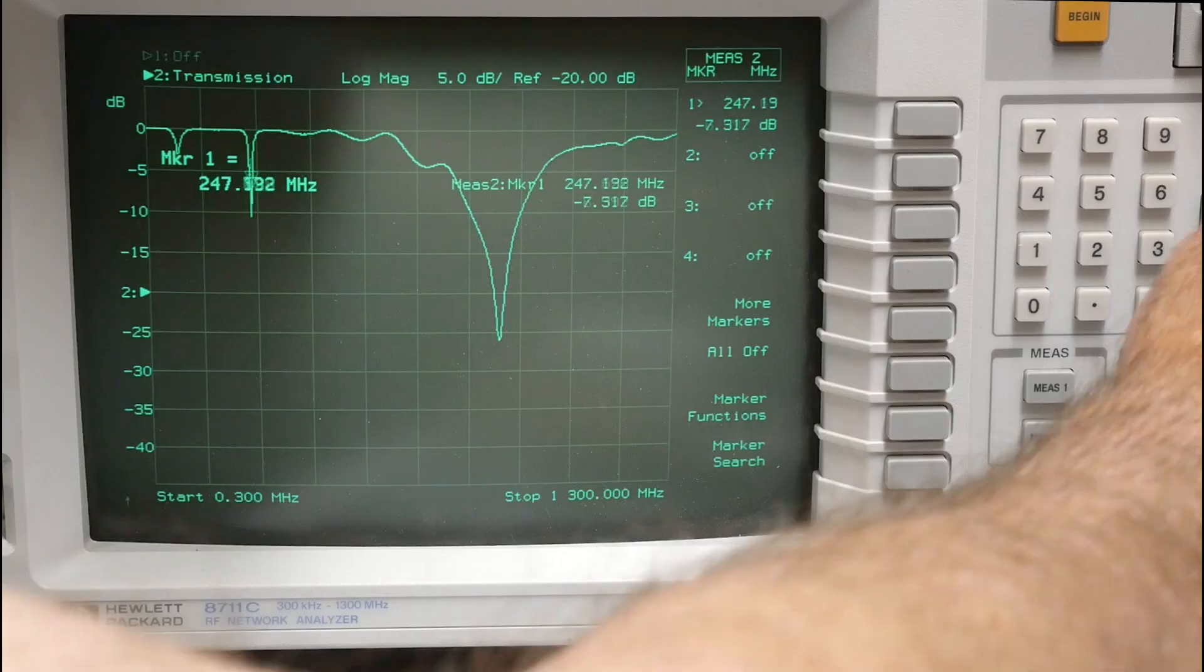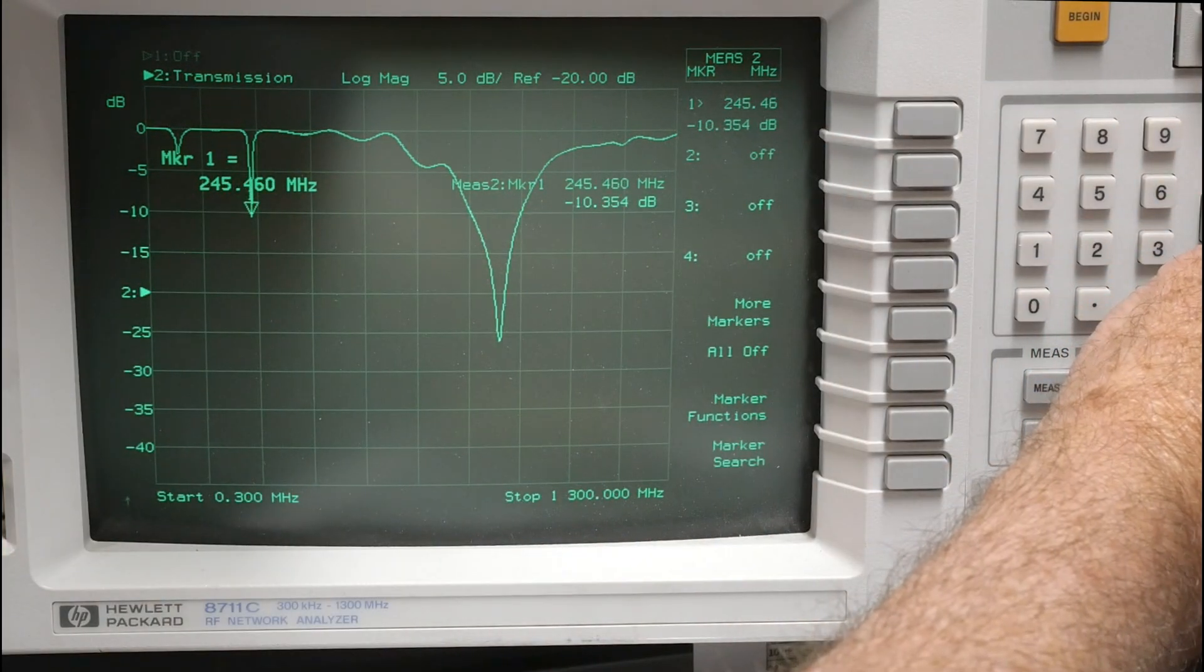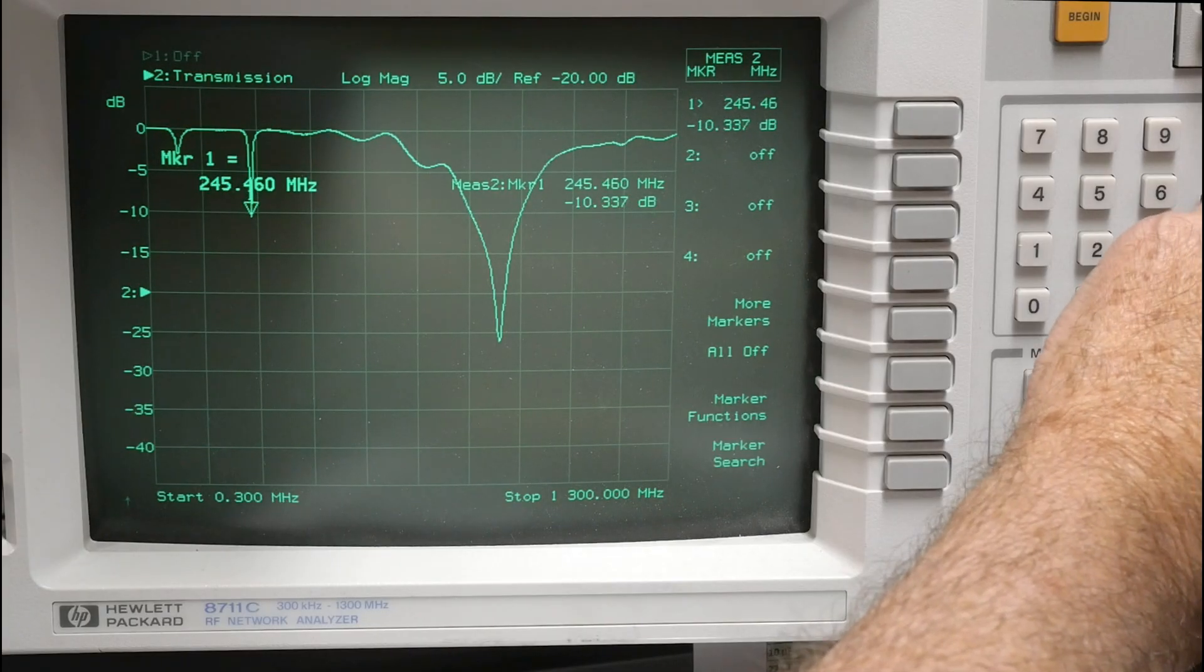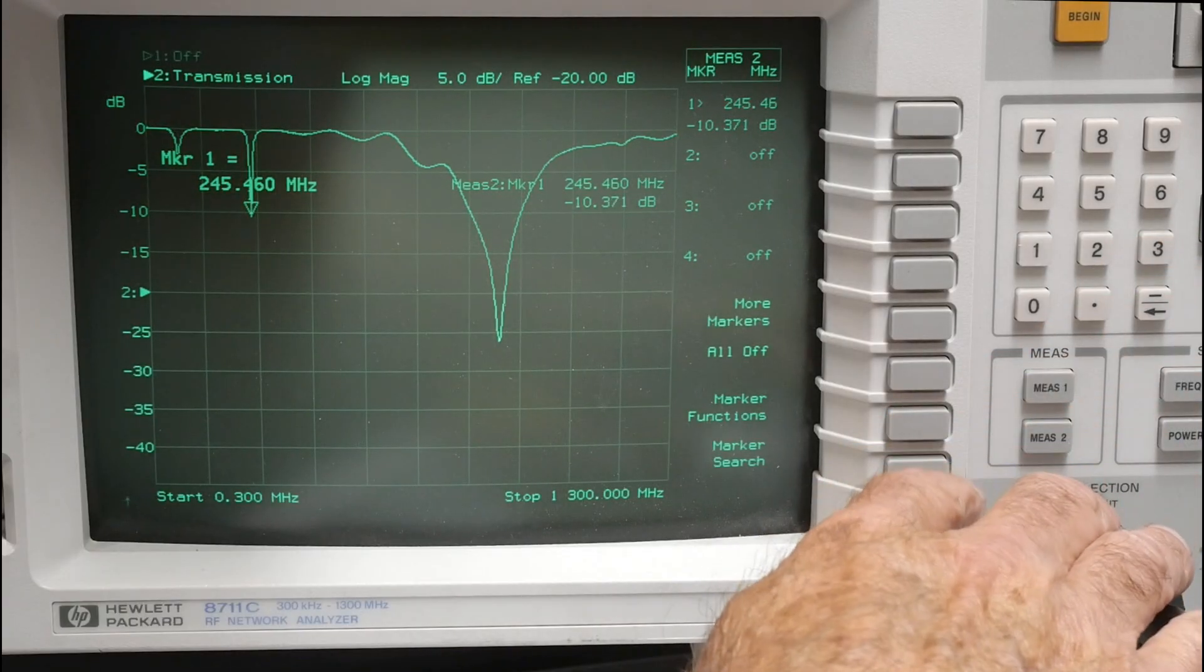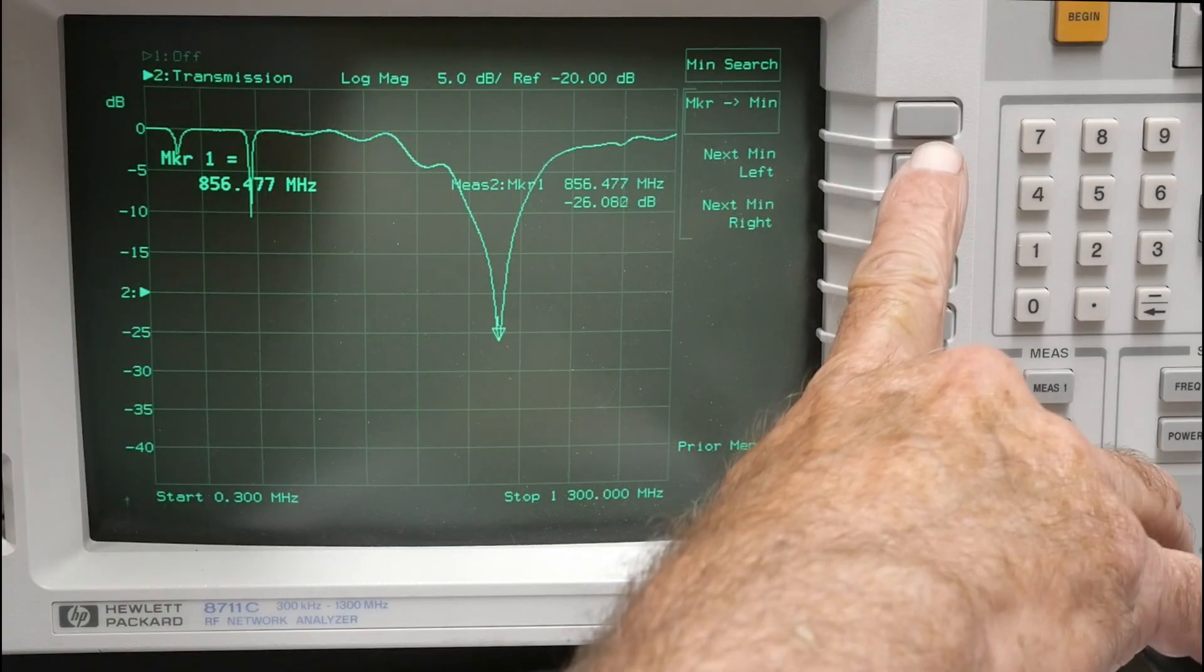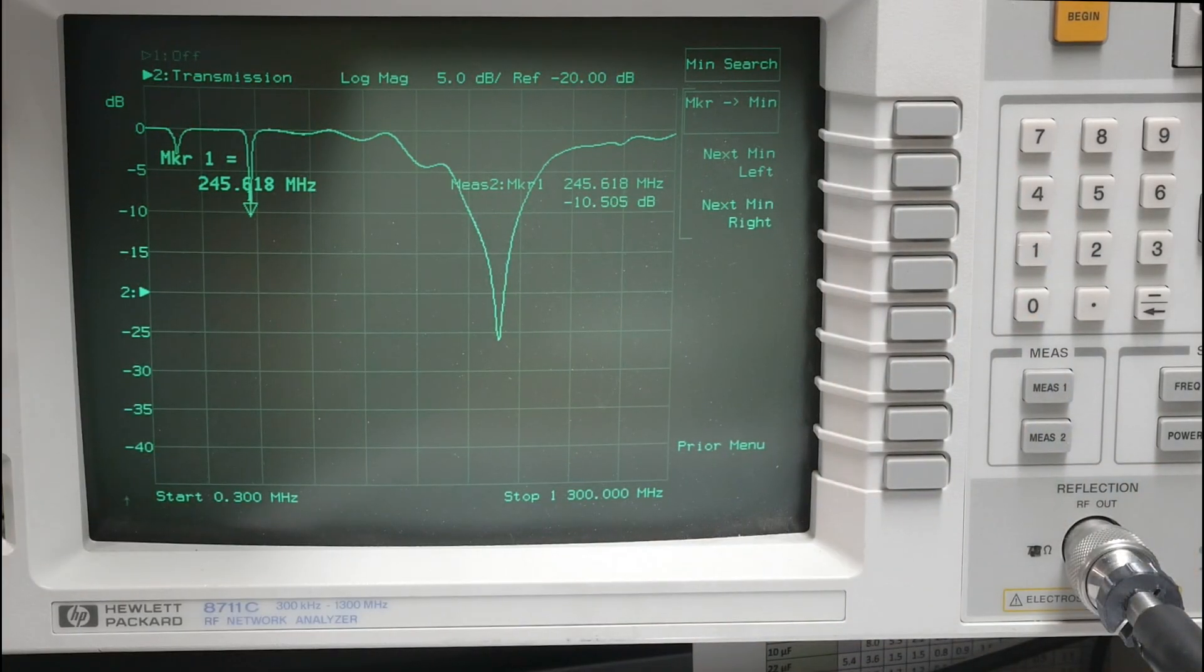I think that's just an artifact. I think this little dip here is probably the one of interest, and it's dipping right around 245. Let's see here, marker search, minimum search, next minimum left, there we go, 245.618.